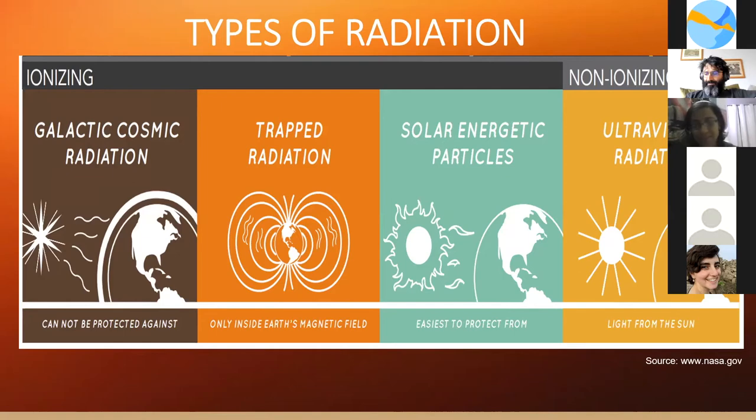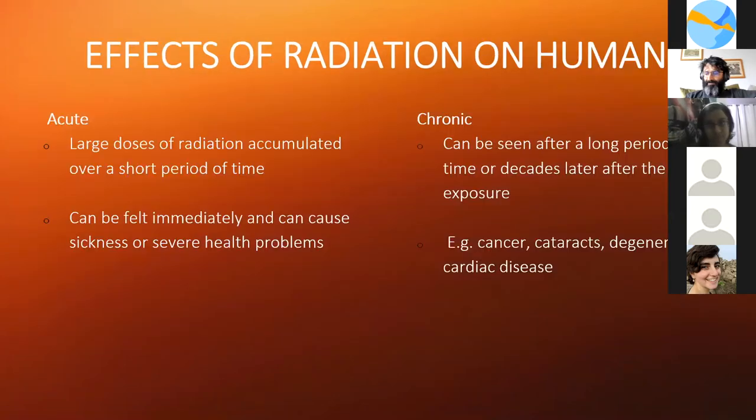So what we need to understand next is the effect this radiation will have on humans. You can have acute effects, which is large doses of radiation accumulated over a short period of time, or chronic effects, which can be seen after a long period of time or decades later after exposure. The estimated radiation dose that we expect is about one to two sieverts, which is actually quite high.